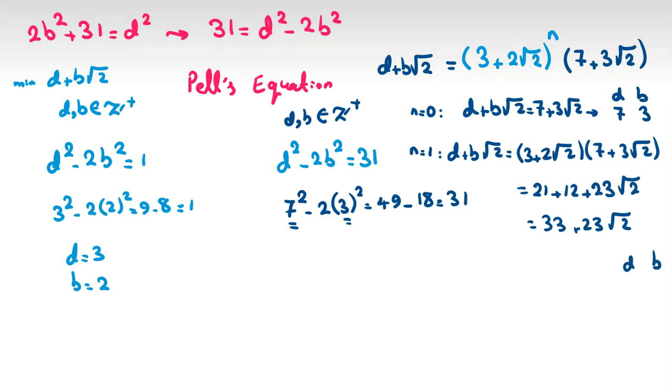The calculation will be 3 times 7 is 21, plus 2 times 3 times 2 is 12, plus 3 times 3 is 9, which gives 9 plus 12 is 21, so 21 plus 12 is 33 plus 23 root 2. Now we can say, okay, d and b works: 33, 23. And if you check, 33 squared minus 2 times 23 squared - 33 times 33 will be 1089, 23 times 23 is 529, and if we calculate and subtract, it will be - you will see it equals 31.